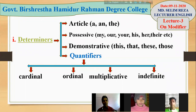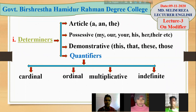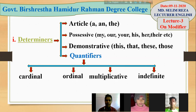Another kind of premodifier is determiners. Determiners itself is of different kinds — it may be article, possessive, demonstrative, or quantifier. Quantifier is also of different kinds: cardinal, ordinal, multiplicative, indefinite. If you are asked to use a determiner, you may use any sort of determiner among them — article, possessive, demonstrative, quantifiers — but you must complete the meaning clearly.